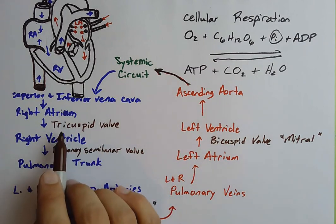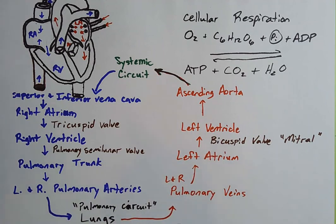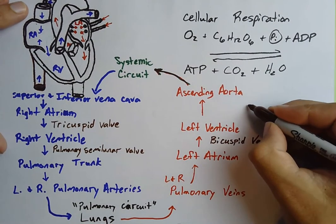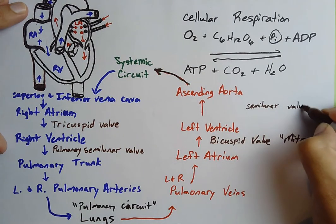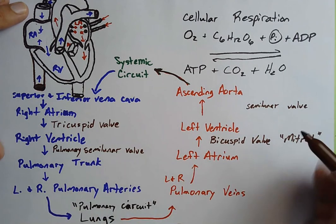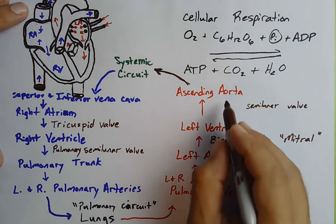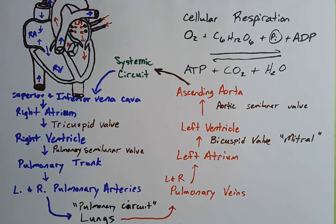What valve comes first? The tricuspid. What valve comes next? The bicuspid. As blood leaves the ventricle to go back out into the aorta, it passes through another semilunar valve — the aortic semilunar valve. It's always a semilunar valve as blood leaves the heart. When poorly oxygenated, it passes through the pulmonary semilunar valve; when oxygenated, it passes through the aortic semilunar valve. That's the flowchart and diagram for learning the anatomy of the heart.